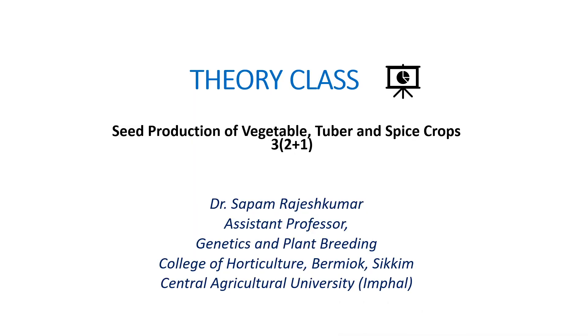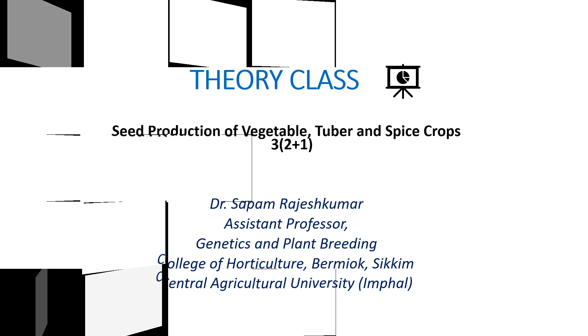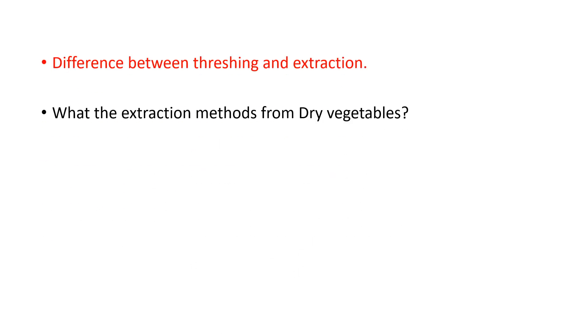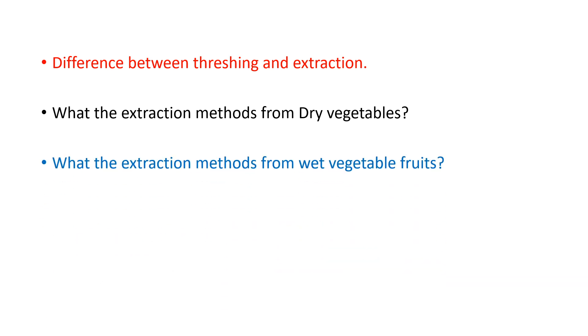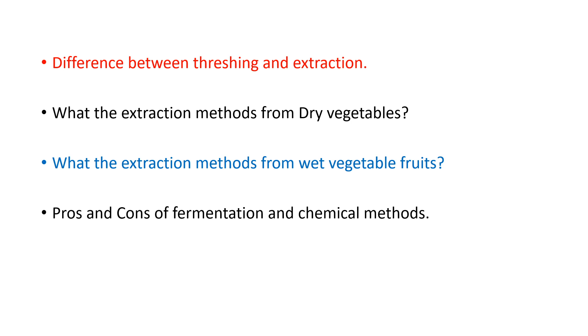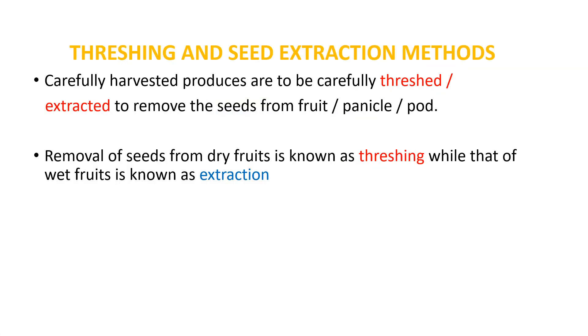Hello students, welcome to the theory class on seed production of vegetable, tuber, and spices crops. Today's topic is seed extraction. By the end of this class, you will be able to answer the following questions: the difference between threshing and extraction, the extraction methods for dry vegetables, the extraction methods for wet vegetable fruits, and the pros and cons of fermentation and chemical methods of seed extraction.